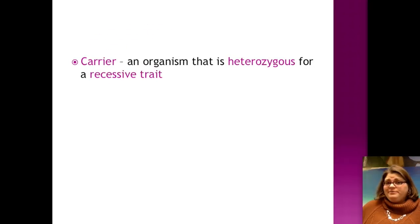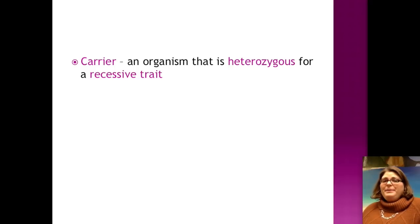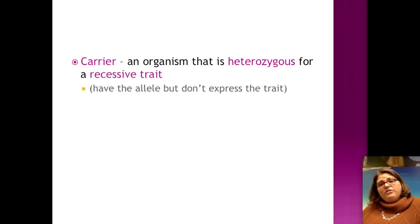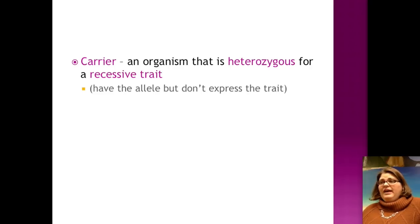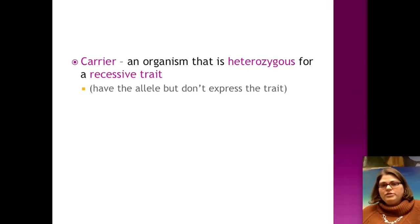Just a reminder: a carrier is an organism that's heterozygous for a recessive trait. We often talk about it as a synonym for heterozygous, but a carrier is only for a recessive trait — what a carrier means is they have the allele and can pass it on to their kids, but they themselves don't express it. It would only be for a recessive trait because otherwise if it were dominant, incomplete dominant, or co-dominant, it would at least be partially expressed.